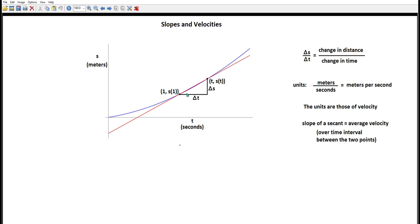And in fact, the slope of a secant is the average velocity over the time interval between the two points. If you think about it, the thing has moved delta s in a time interval delta t. So its average velocity is going to be delta s divided by delta t. And now the slope of the tangent is going to be the instantaneous velocity at the point of tangency.